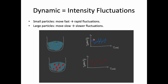How fast these fluctuations happen over time is actually related to the size of the particles. If the particles are small, they move faster in solution, causing rapid fluctuations. On the other hand, if the particles are large, they move more slowly and therefore produce slower fluctuations.